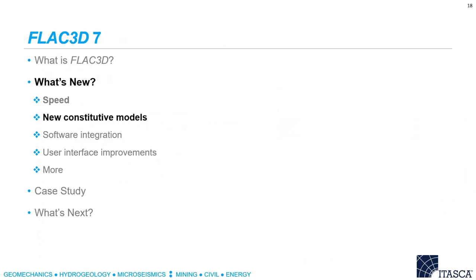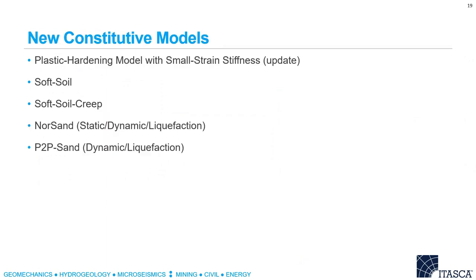That's all I'm going to say about speed. The next thing is some new constitutive models added to version 7. There are a few new models depending on how you count them: the plastic hardening model already existed in version 6 but we've added new capabilities; soft soil and soft soil creep are new, as well as NorSand and the P2P Sand model.